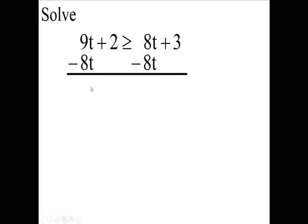You're going to get 1 times t, which is t. 9 minus 8 is 1. 1 times t is t. Plus 2 is greater than or equal to 3.